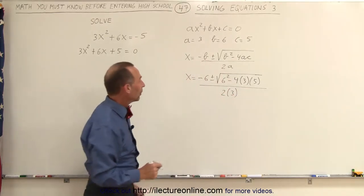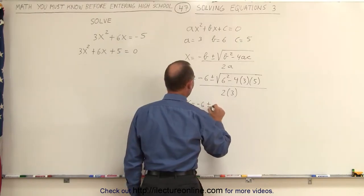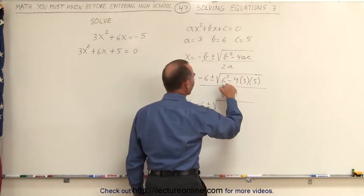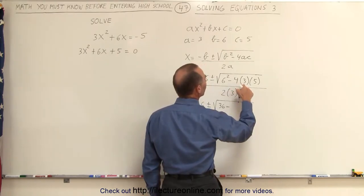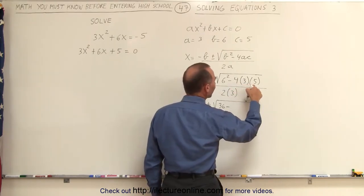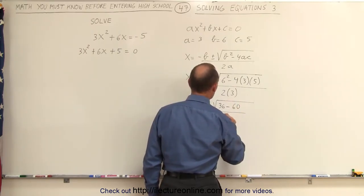Simplifying that, we get the following: x is equal to -6, plus and minus the square root of 6² is 36, minus 4 times 3, which is 12, times 5, which is 60, all divided by 2 times 3, which is 6.